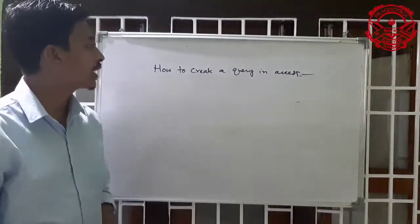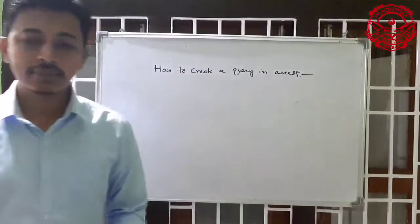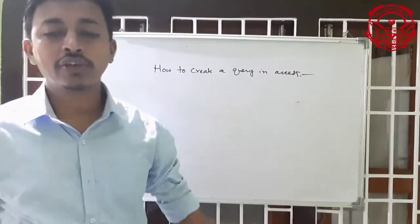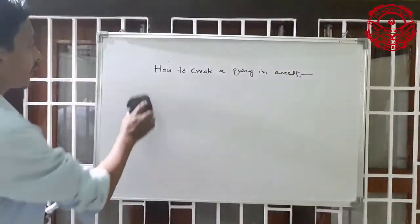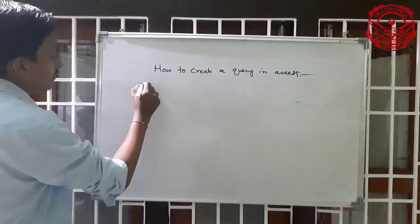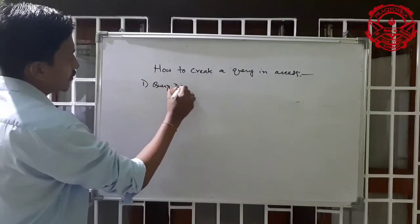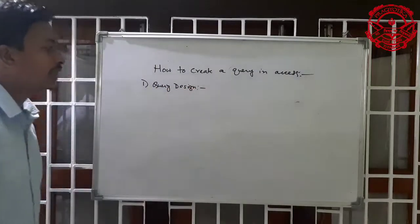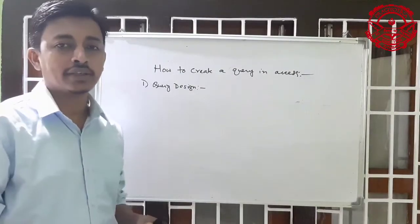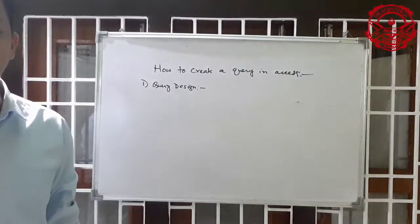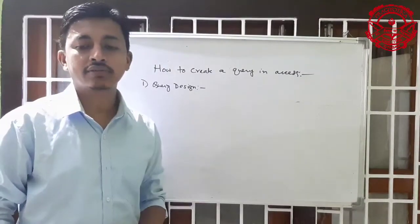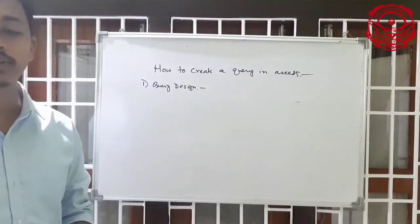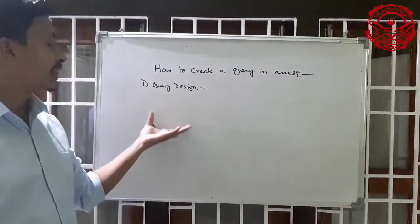Today we will discuss how to create a query in Access. There are two ways in which we can create a query: first one is query design and second one is query wizard. We will use the student table for creating a query using query design and query wizard. In your book you can see there is a student table given here, which is used for creating a query.